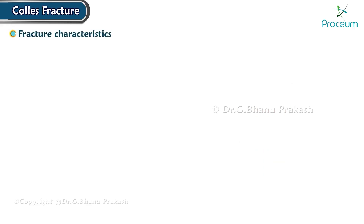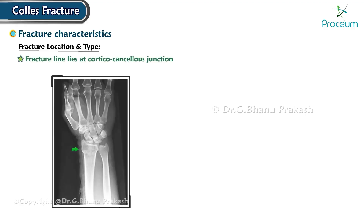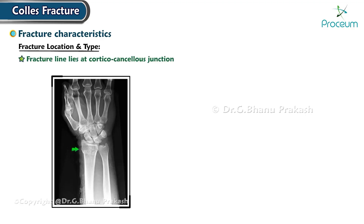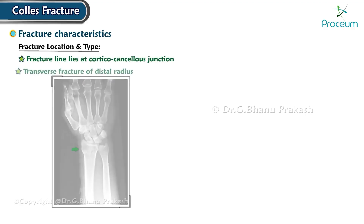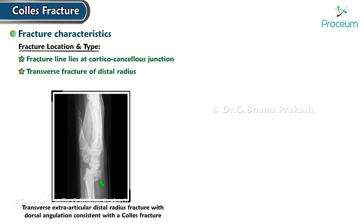The fracture line lies at the cortical cancellous junction. It is a transverse fracture at the distal radius, often associated with dorsal subluxation of the distal fragment.